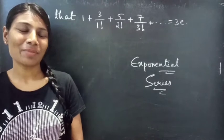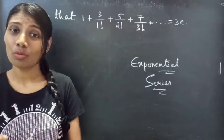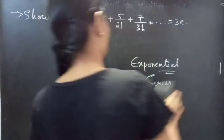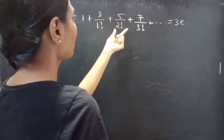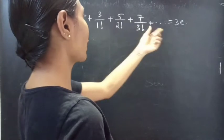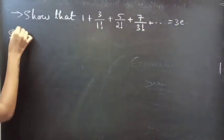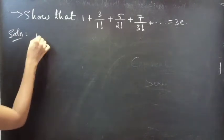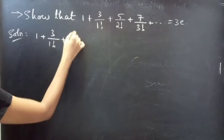Hello everyone, this is Dei Kalpana. In this video we are going to see a problem from exponential series. Let's get started. Show that 1 + 3/1! + 5/2! + 7/3! + ... equals 3e. Solution: let's consider the LHS: 1 + 3/1! + 5/2! + 7/3! + ...